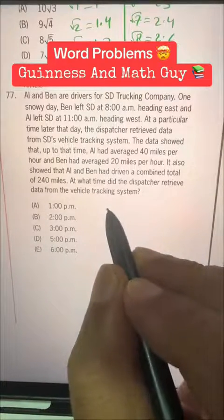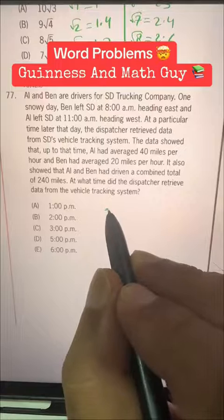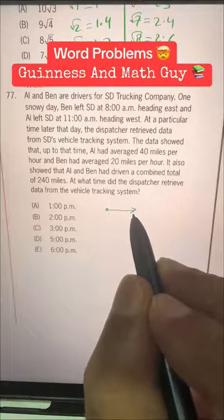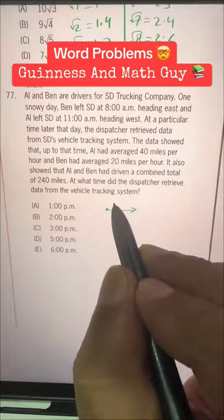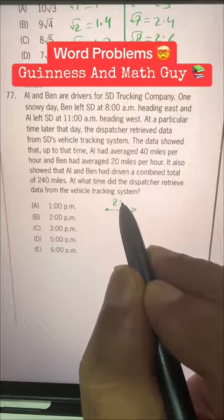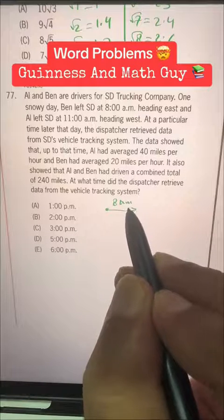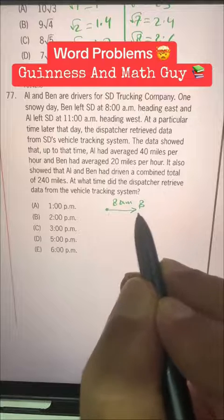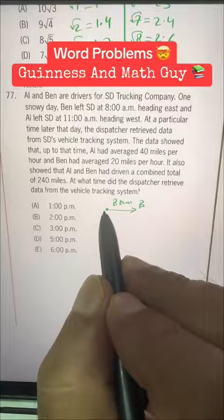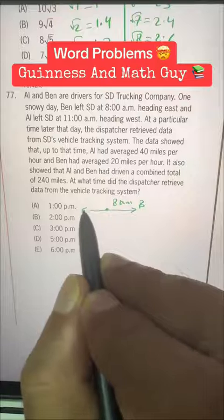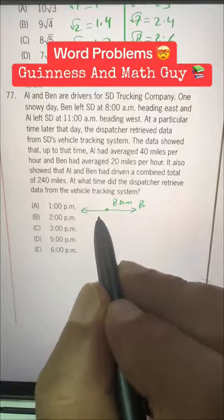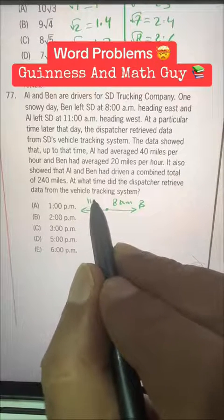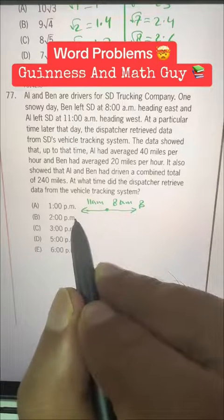So if they left from this place SD trucking company, one left heading east—8am and this is B heading east. And the other, Al, left at 11am and heading west.